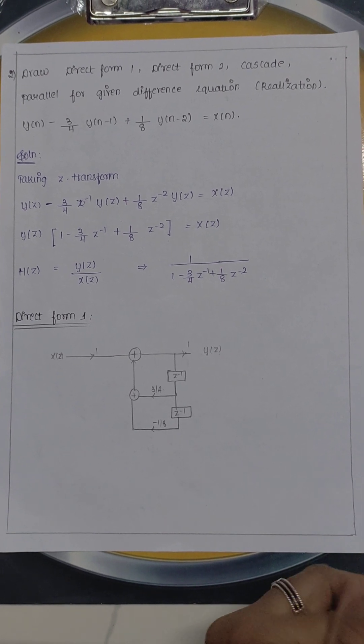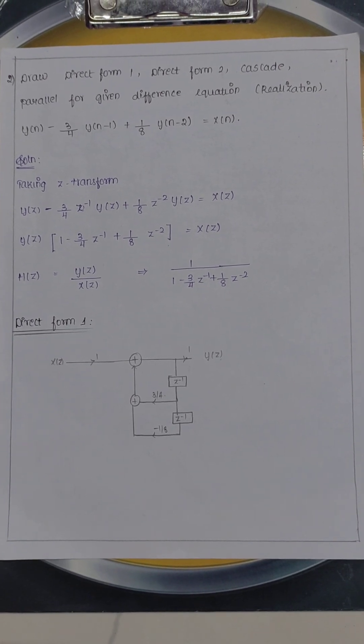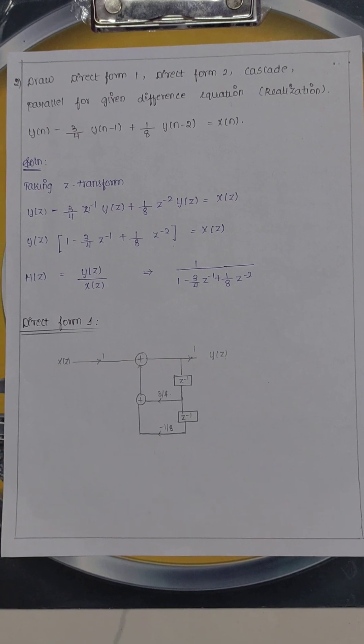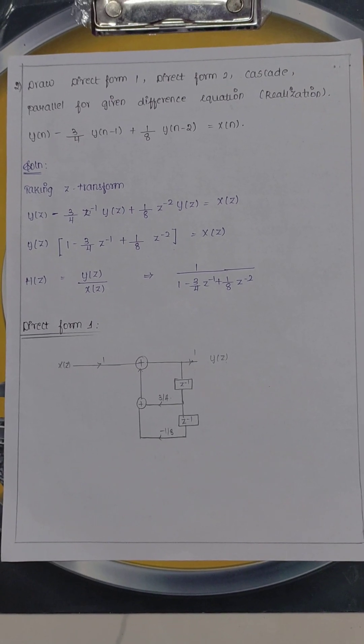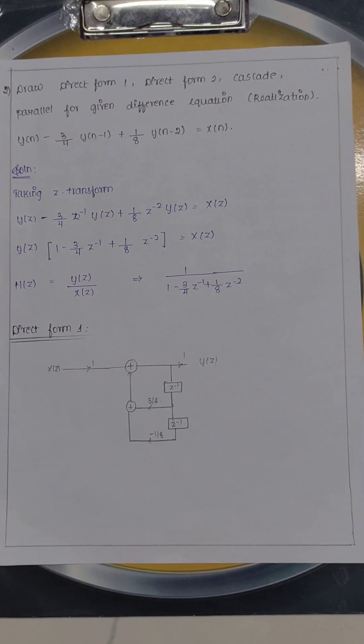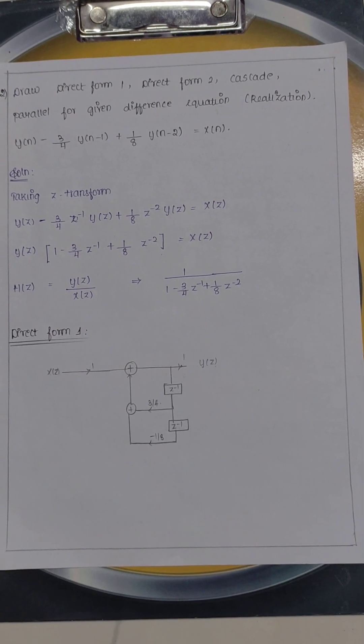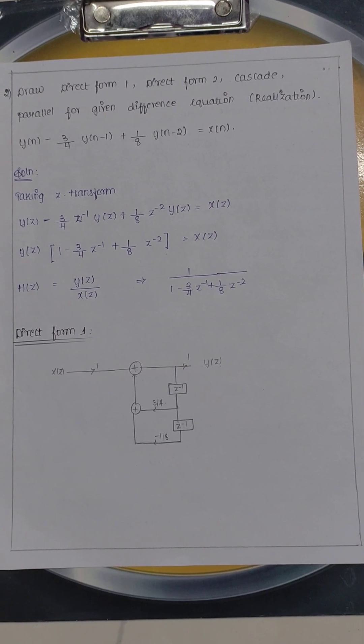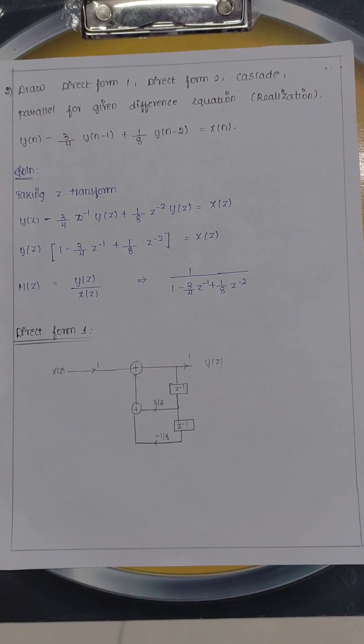Number 1, direct form 1. We have the direct form. The numerator value is only 1, so simply draw a line, x(z) 1. Denominator, highest order is 2, so put z power minus 1 one box, z power minus 2 another box. This is called as delay.